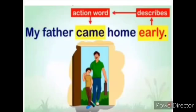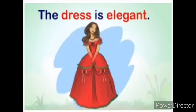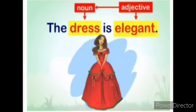Now consider: 'The dress is elegant.' Here, 'dress' is a noun, and 'elegant' is an adjective, not an adverb. Describing a noun is what an adjective does. So here, 'elegant' is an adjective because it describes the noun 'dress.'